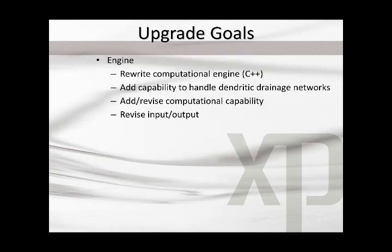Some of the goals set out a few years back in the update were not to change the computational engine, but to translate it into current code — it was rewritten into C++. Along with adding the capability to handle a branched or dendritic drainage network, which was very important to the county. I want to stress and emphasize that the engine was translated. A few things were added, but largely the computations were the same. A run done with the DOS version should match the computations done today with C++.